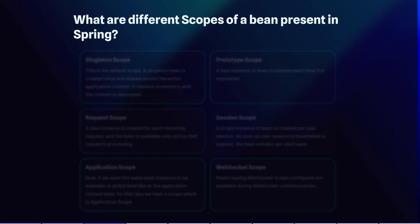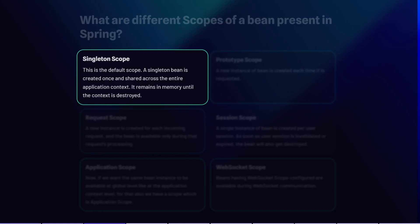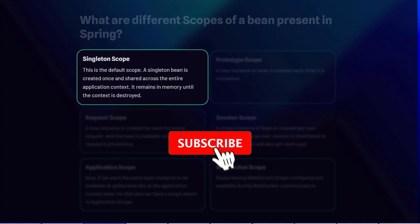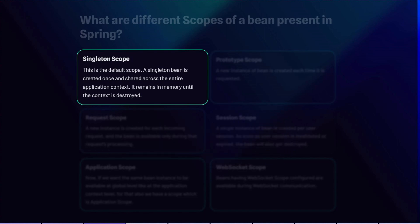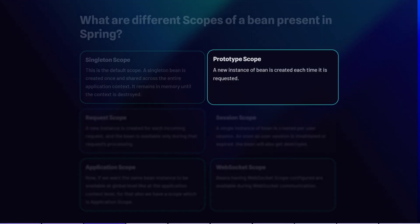The next question is: what are the different scopes of a bean in Spring? In Spring, bean scope defines the lifecycle and visibility of a bean within the application context. The first is singleton scope — a singleton bean is created once and shared across the entire application context. It remains in memory until the context is destroyed, and this is the default scope if none is explicitly defined.